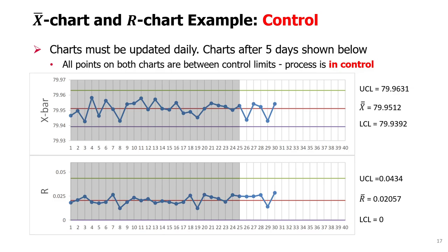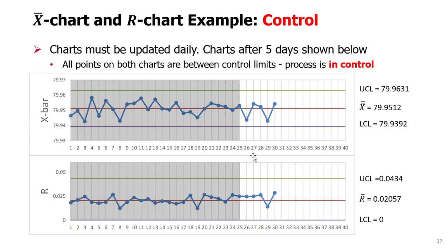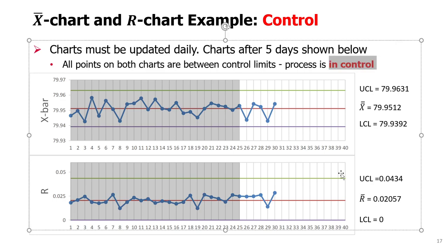Remember, setup is done once, and then we want to control the process by controlling the critical measurement — the height of steer support. Every day we collect a sample, calculate x-bar and range, and update the chart. After five days, we might have a chart showing days 26 through 30 with new points. Each day we randomly select five units — this should be proper random selection, not just the first or last five samples. We calculate the x-bar average and range and put them on the chart. This indicates the process is in control, because the variability is within the upper and lower control limits on both charts.